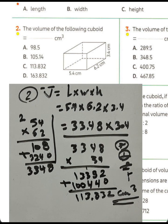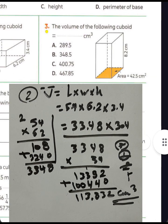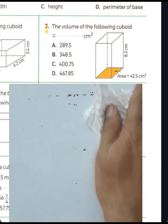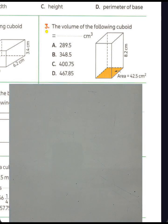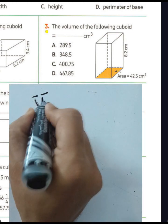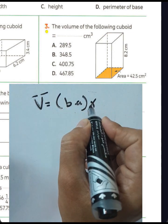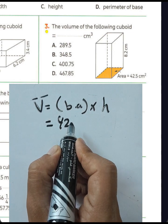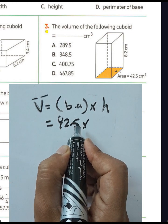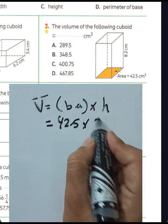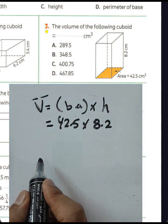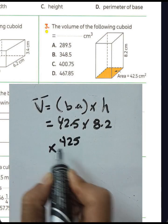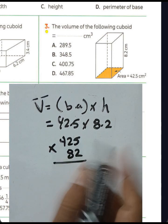Question number three: find the volume of the following cuboid. We have the area of the base equal to 42.5 square centimeters and the height equal to 6.2 centimeters. So we write 425 multiplied by 62, placing the point after two places in the result.